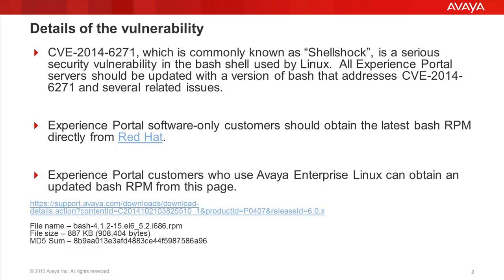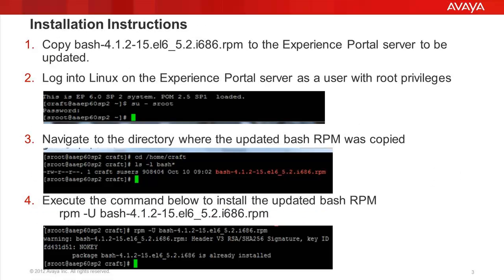Let's see the installation instructions for this Bash RPM. First, we need to copy this RPM into the Experience Portal servers — both the EPM and the MPP servers. This can be done using the WinSCP software or using SCP from within the network.